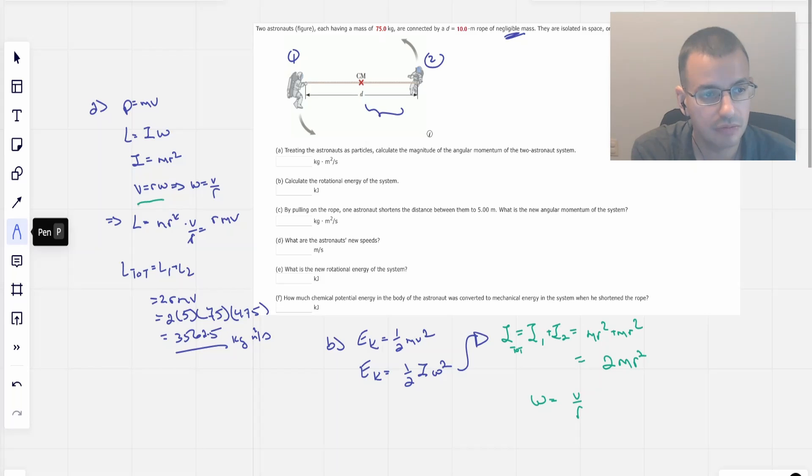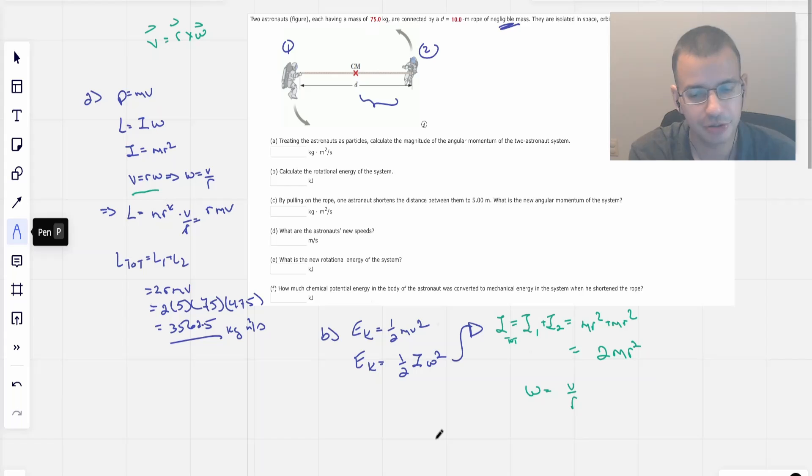Omega equals v over r. So we use the relationship velocity equals r cross omega. Since the velocity is circular motion, it's going to be tangent to the circle that they're making. Right angle cross product is going to be rw, which is why I'm just kind of jumping to v equals rw there. So omega, what I call w, is angular speed, which is going to be velocity or speed divided by radius.